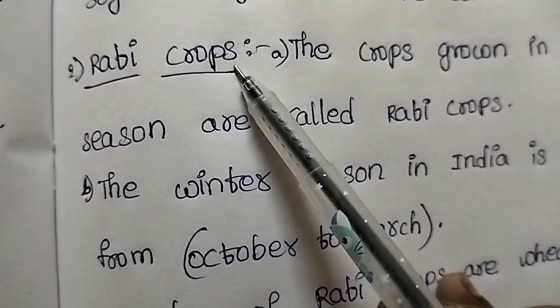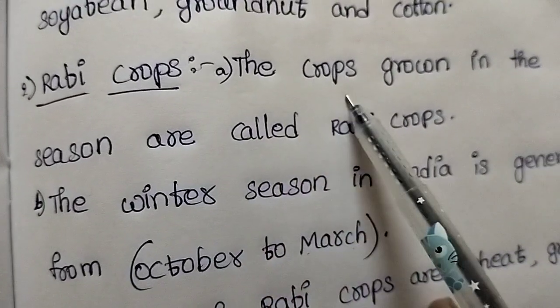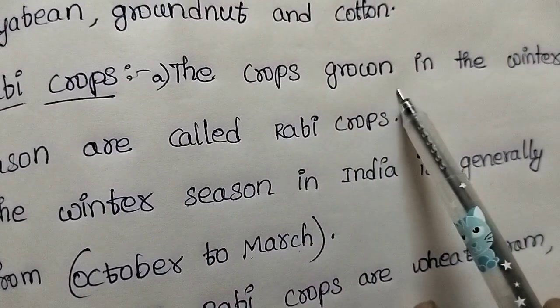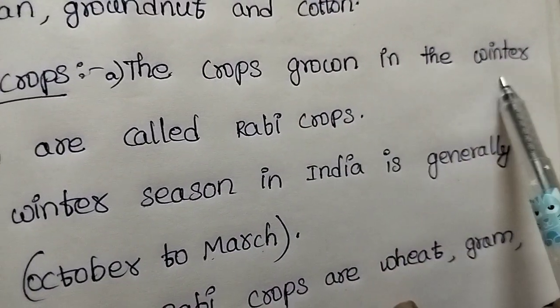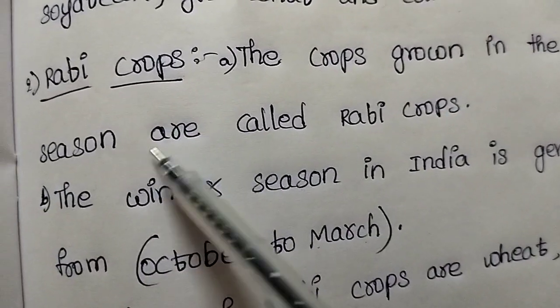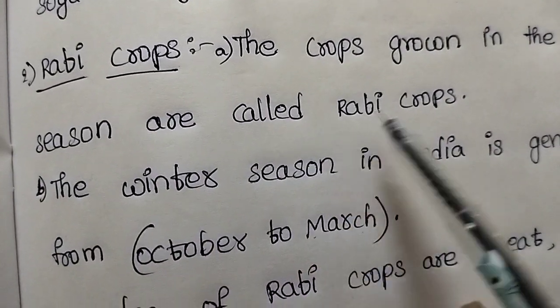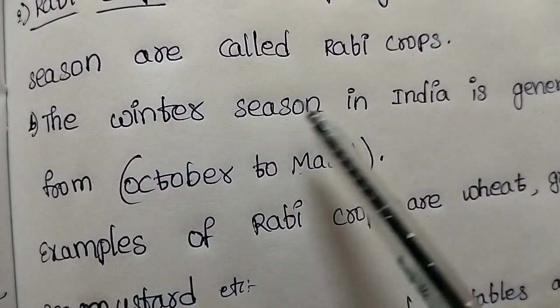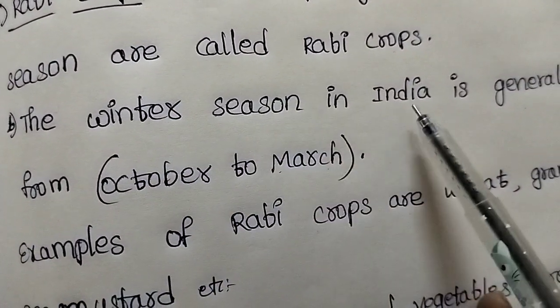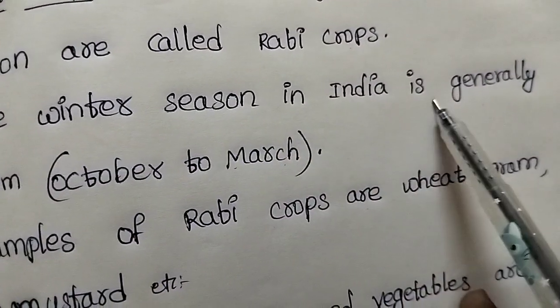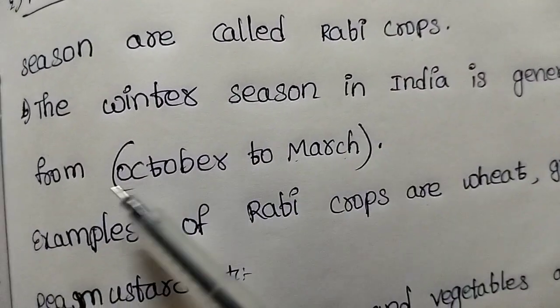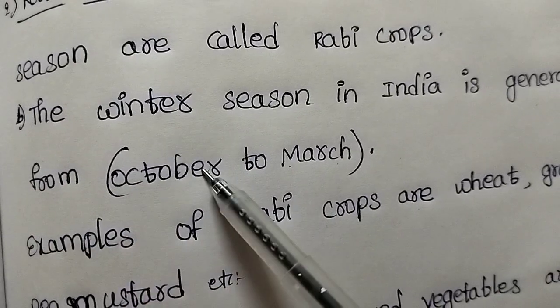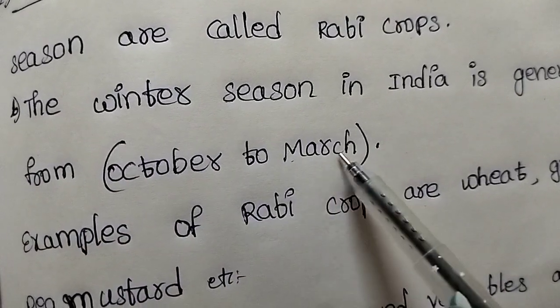Rabi crops. The crops grown in the winter season are called Rabi crops. The winter season in India is generally from October to March.